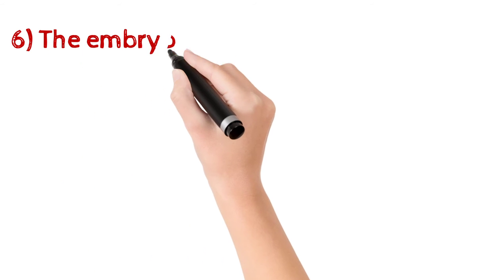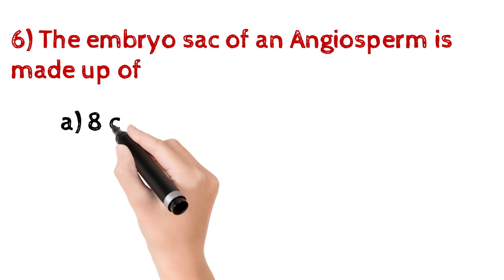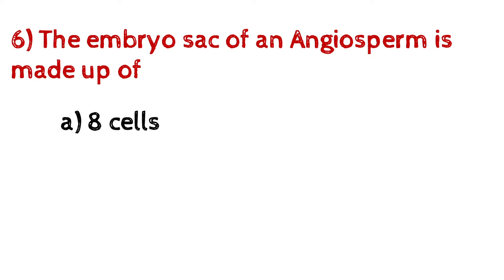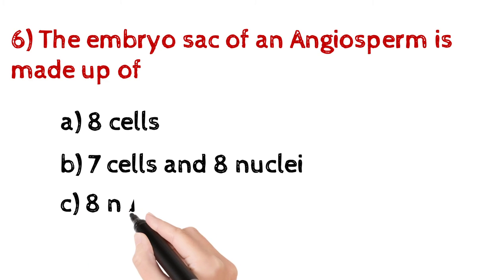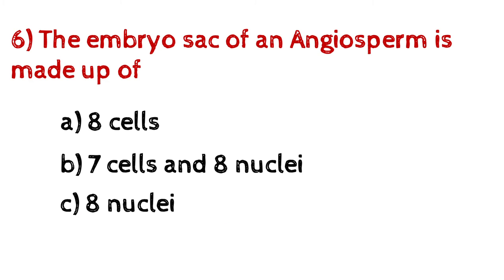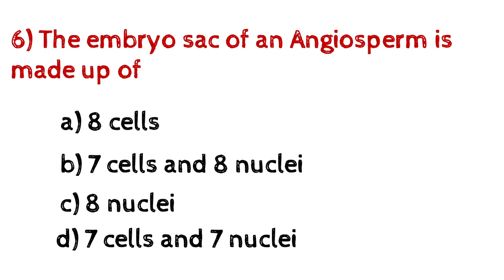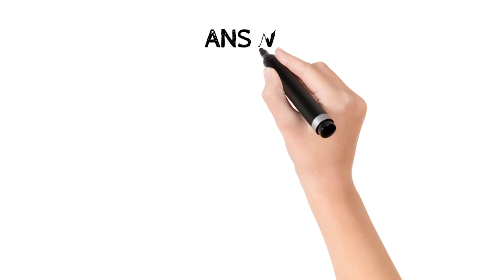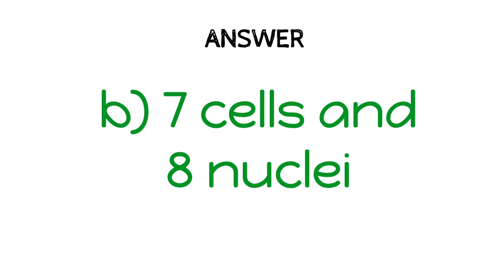Question number six: the embryo sac of an angiosperm is made up of — A) Eight cells, B) Seven cells and eight nuclei, C) Eight nuclei, D) Seven cells and seven nuclei. And the answer is B) Seven cells and eight nuclei.